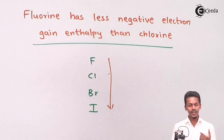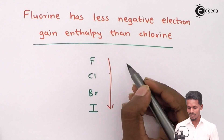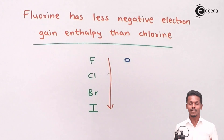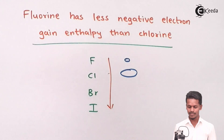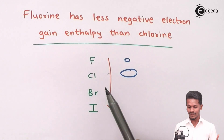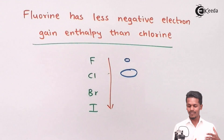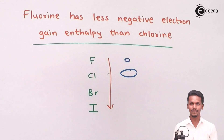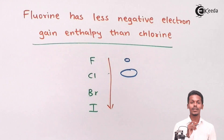So in this case, when we are talking about fluorine and chlorine, what should normally happen is that fluorine should have a smaller size compared to chlorine, which has a bigger size. Moreover, the nuclear charge would be more for fluorine and less for chlorine. So what makes fluorine have less negative electron gain enthalpy than chlorine? This is what we are going to discuss — it is a very unusual thing that we are going to see now.